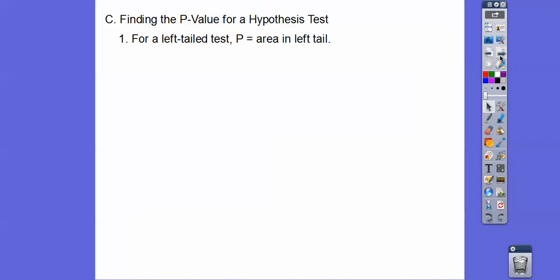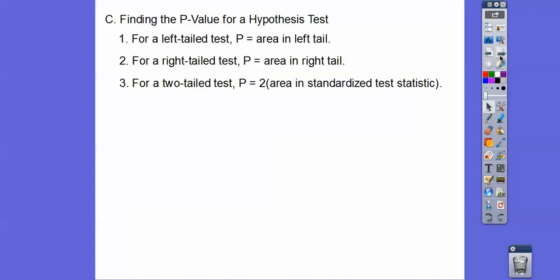So finding the p-value for our hypotheses test. For a left-tailed test, p is the area to the left. For the right, p is the area to the right. And remember, our Z scores give you the areas to the left. So if it's a right tail, you've got to do 1 minus that to get the area to the right.